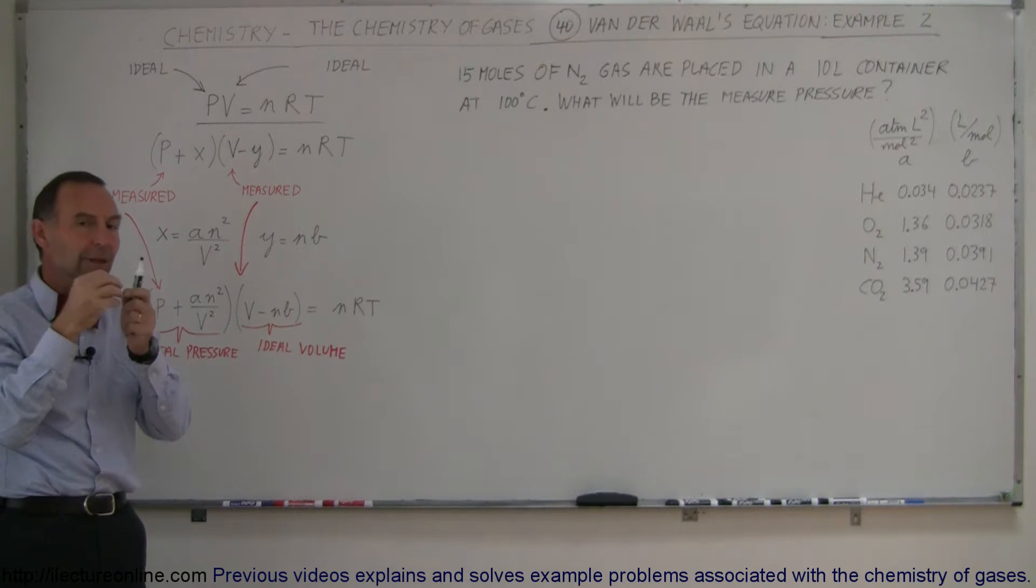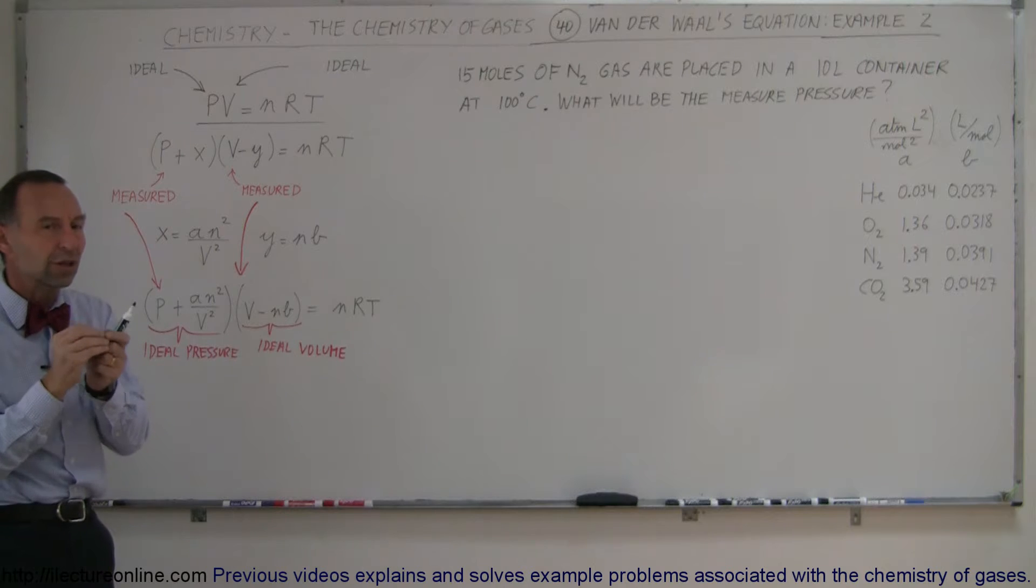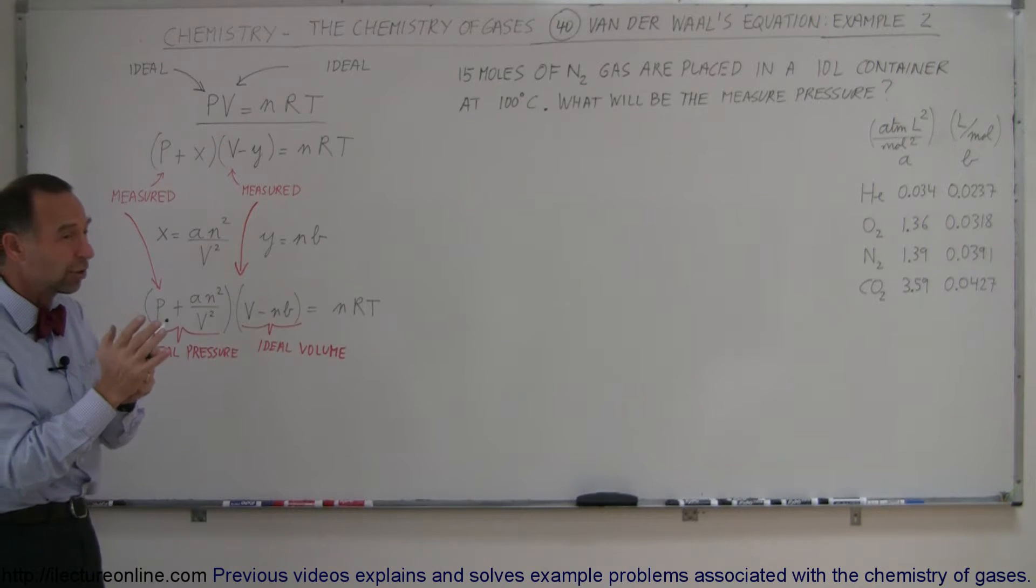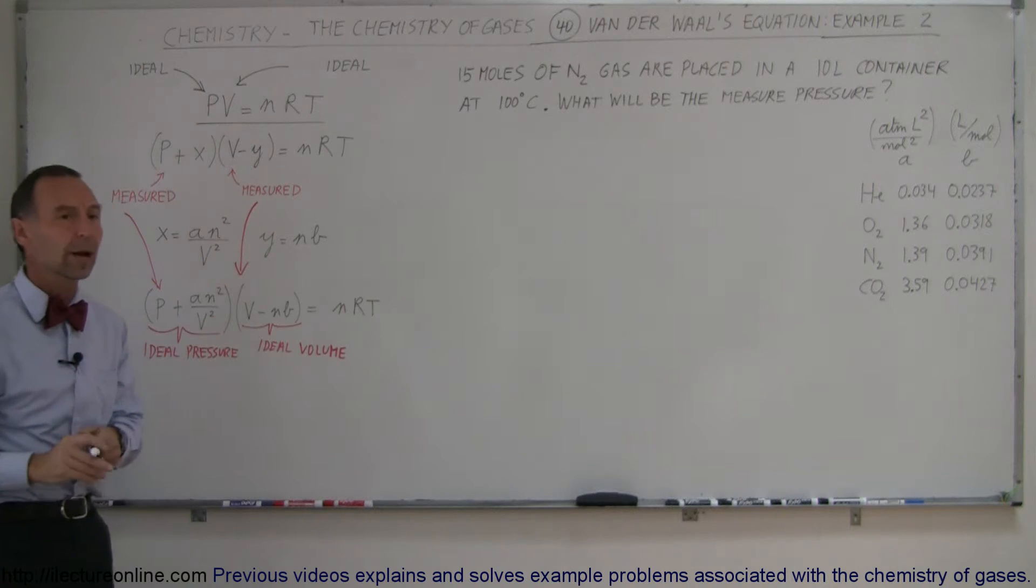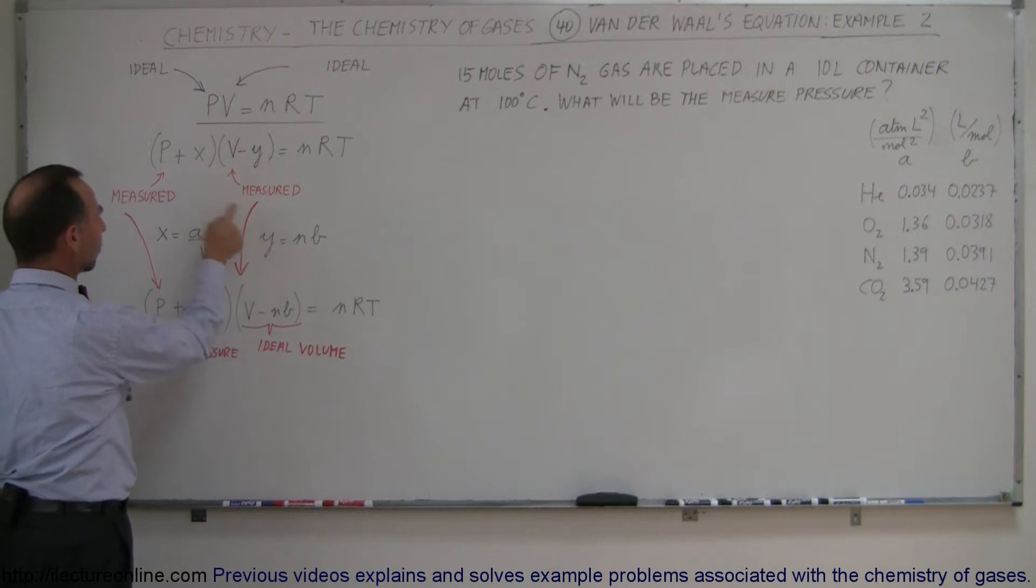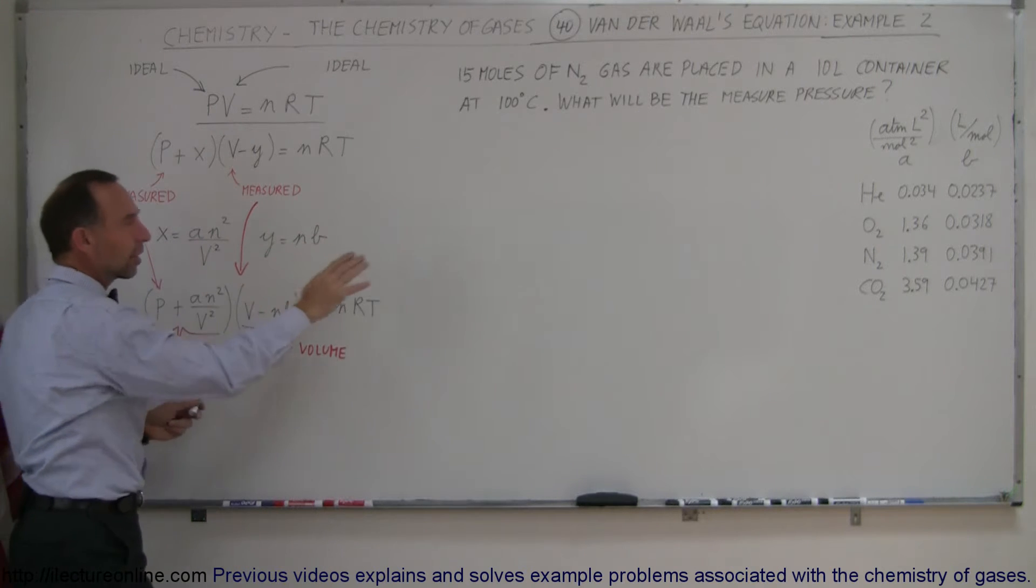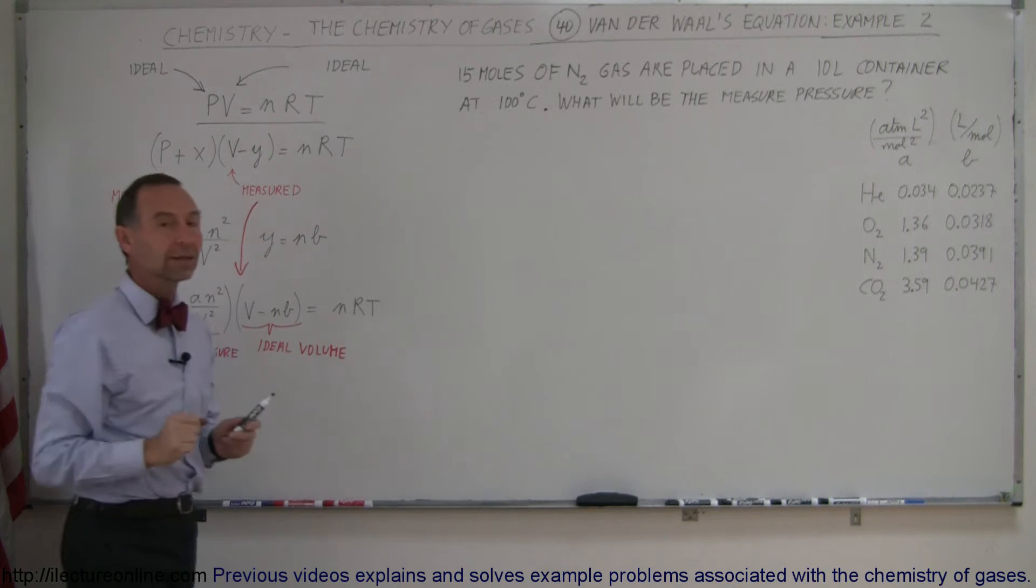And secondly, the intermolecular forces between the molecules also cause the pressure that you would measure not to be quite the pressure that you want to put into the ideal gas equation to work out your problems. So he wanted that adjustment factor. And the adjustment factor by van der Waals were calculated to be these, where A and B are simply constants associated with the particular gas.